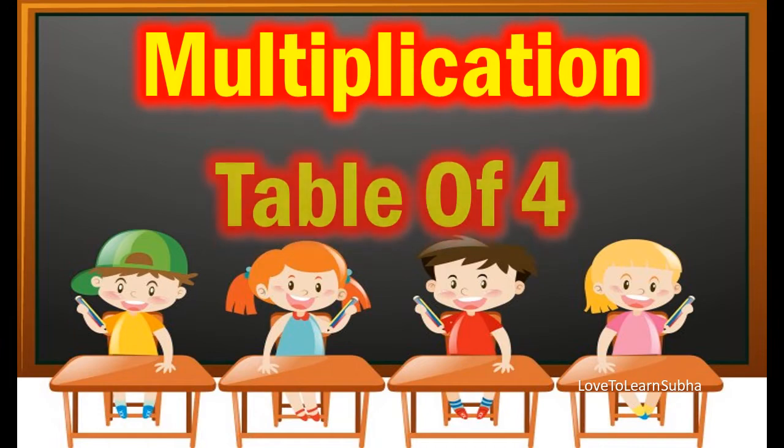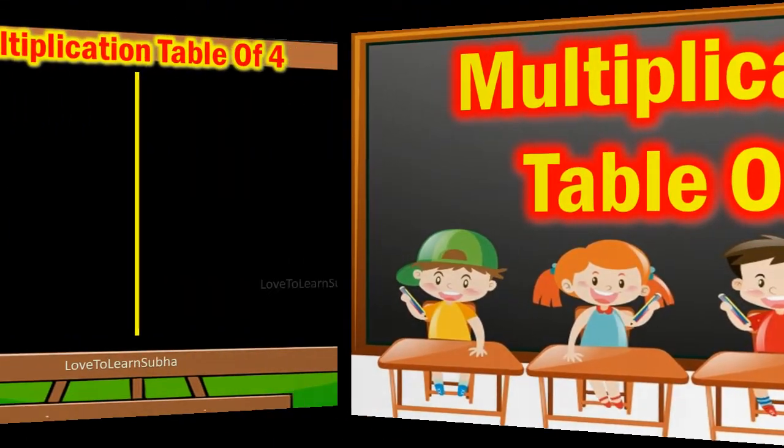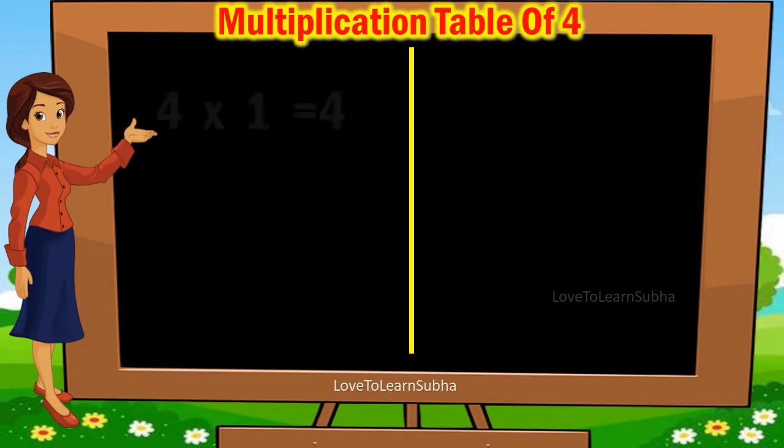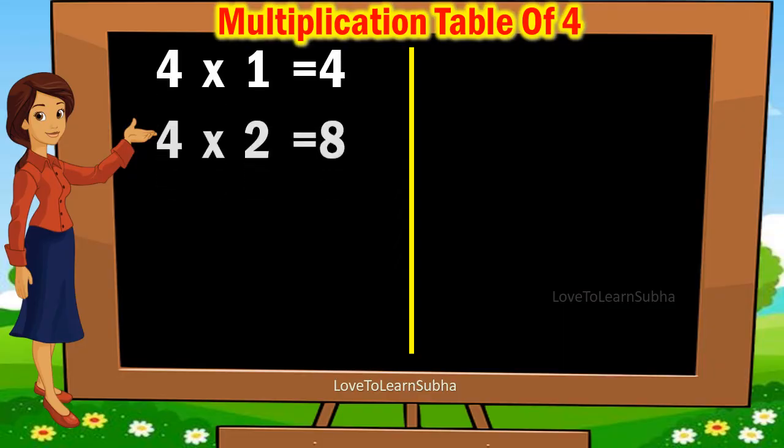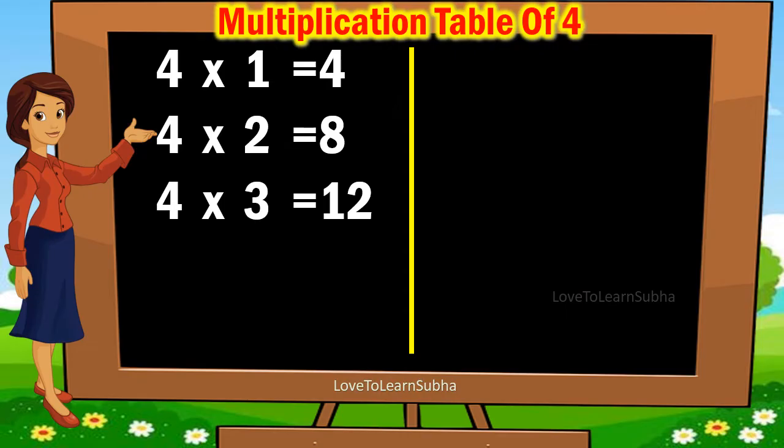Multiplication table of 4: 4 ones are 4, 4 twos are 8, 4 threes are 12, 4 fours are 16, 4 fives are 20.